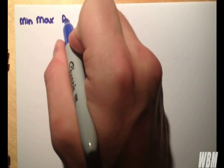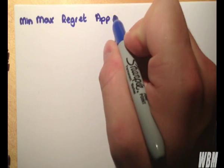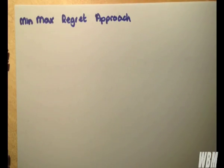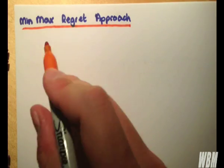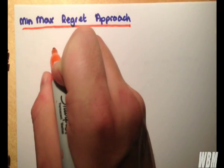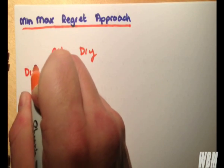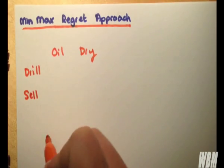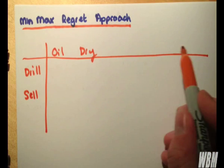Finally, we consider the min-max regret approach, which is quite an interesting way of looking at things, and you'll understand why in just a second. So if we draw out our graph again here, oil, dry, and all the rest of it. Drill, sell. Notice I'm leaving a little bit more room here.